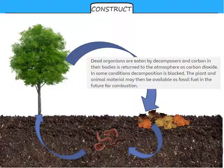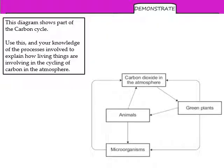Lastly today, then, this exam question for you. This diagram shows part of the carbon cycle. Use this and your knowledge of the processes involved to explain how living things are involved in the cycling of carbon in the atmosphere. Looking at this, you want to be able to explain how carbon moves in the direction shown by each one of these arrows: how does it move from animals to being in the atmosphere, from being in the atmosphere to being in green plants, from being in plants to being in animals, from being in animals into microorganisms like bacteria and fungi, and how does it move from there to be back in the atmosphere? So pause here and have a go at that, please.